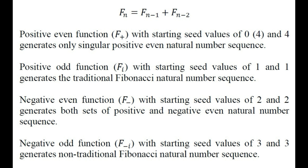Negative even function F- with starting seed values of 2 and 2 generates both sets of positive and negative even natural number sequence: 2, 2, 4, 6, 10, 16, and so on.